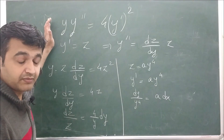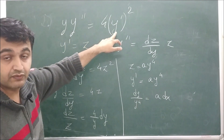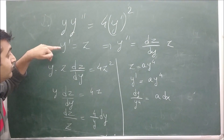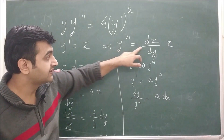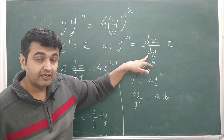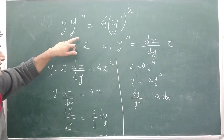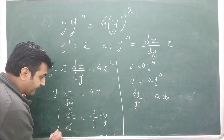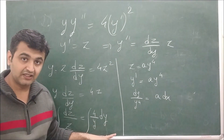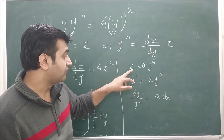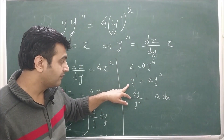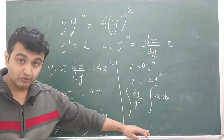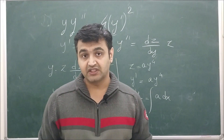Let's take one more example: y times y double prime equal to 4 times y prime squared. This is a second order non-linear differential equation that does not involve x explicitly. Using y prime equal to z and rewriting y double prime as z times dz over dy, we substitute, cancel z, and get a variable separable equation. Integrating both sides gives ln(z) equal to 4 ln(y) plus ln(c), so z equals a times y to the power 4. Replacing z with y prime and doing variable separable again, then integrating, gives the final answer.